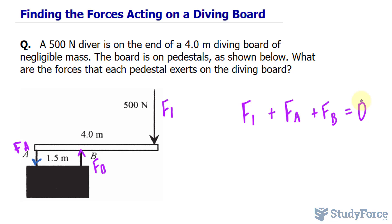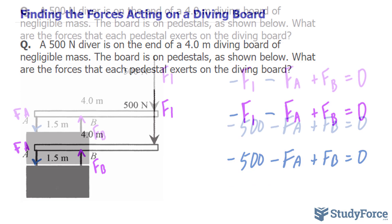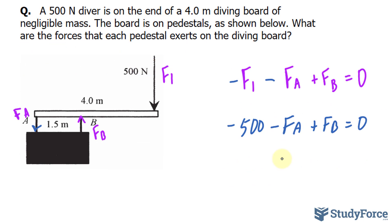At this point, it would be appropriate to say that upwards is positive and downwards is negative. So what I will do is make this force negative and this force also negative because they are the ones that are going down. And if I rearrange and substitute 500 in for F1, I get negative 500 minus FA plus FB. And solving for FB, I bring both of these terms over and I get FB is equal to 500 plus FA.